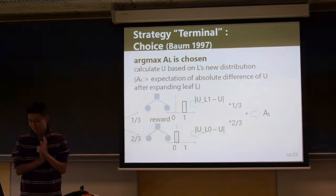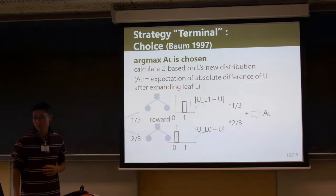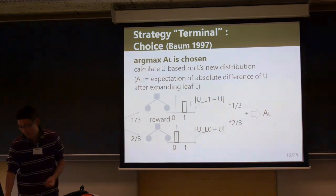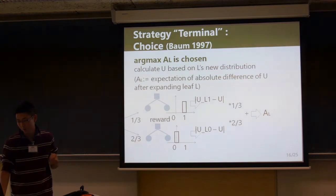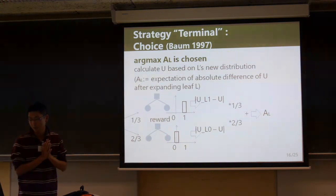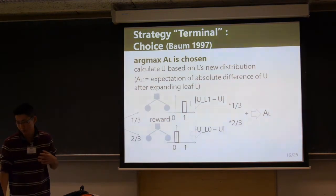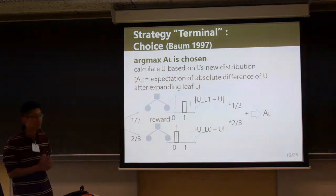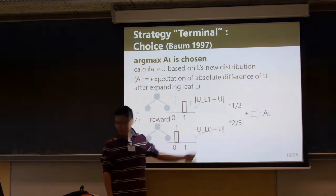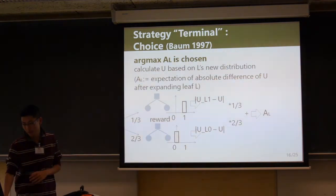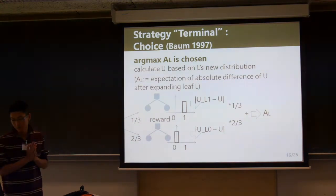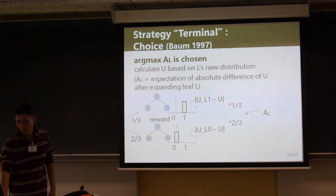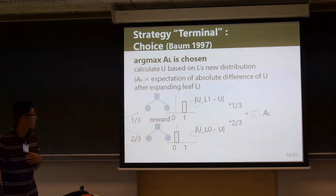Then it calculates U-value based on the new distribution. In this example, U-L1 and U-L7 are the newly calculated U-values. Next, the algorithm calculates the expectation of the absolute difference of U-value, which I call AL. The algorithm calculates AL for each leaf L and chooses the max AL over the leaves. Applying this strategy to our hybrid MCTS is one idea.